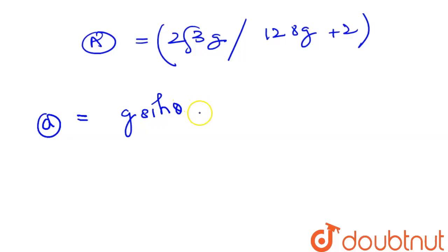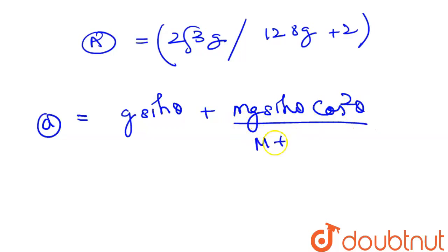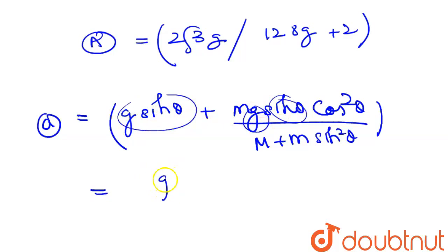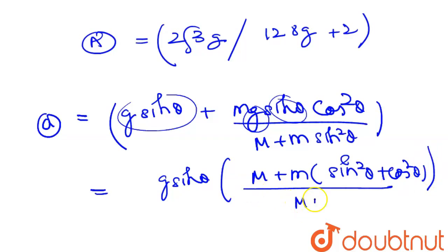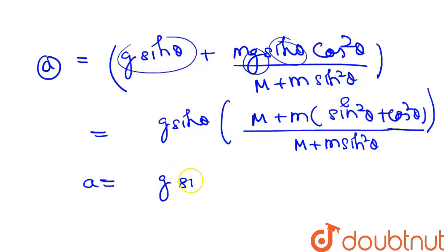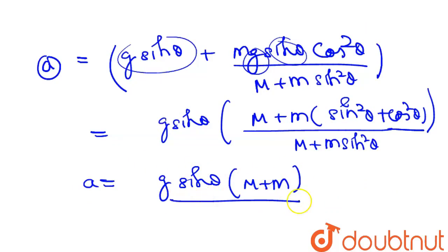So: a = g sin theta plus g times sin theta cos squared theta, all over capital M plus small m sin squared theta. Taking g sin theta as common: a = g sin theta times (capital M plus small m) over (capital M plus small m sin squared theta).